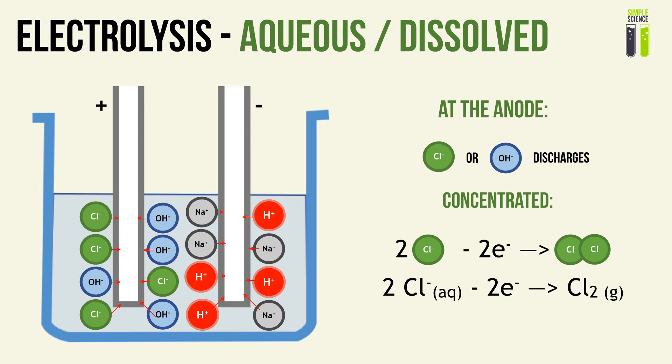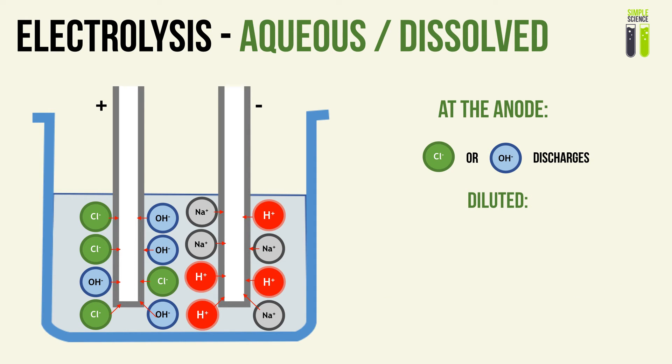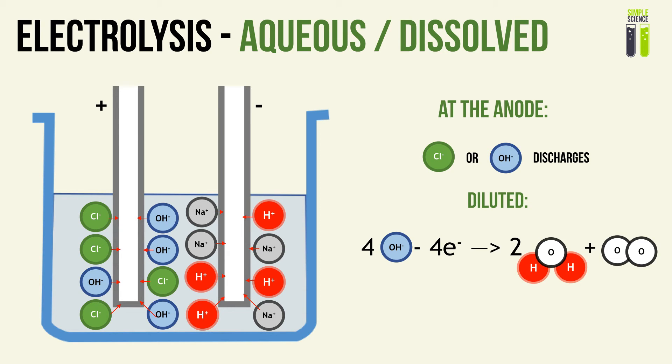Chlorine will exist as a gas, as electrolysis usually takes place at standard conditions. Now, if the solution is dilute, the hydroxide ion will discharge. The half equation is: 4OH⁻(aq) → 2H2O(l) + O2(g) + 4e⁻. So whenever hydroxide ions discharge, what forms is water molecules and oxygen gas.